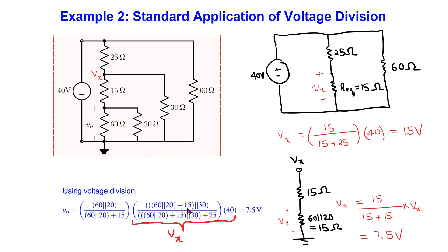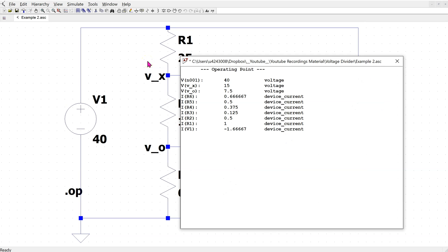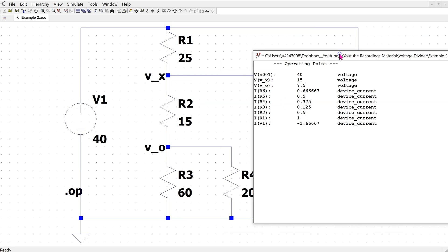With a little bit of experience and practice, instead of going through these intermediate steps, we can actually write an expression for the output voltage directly as shown. In this expression, the two parallel lines denote parallel combination of resistors, and we can identify the two voltage dividers that form part of the expression. Please pause the video now if you wish to study this in more detail. This is the same circuit constructed in LTSPICE. When we simulate, we can see that the output voltage V0 is 7.5 volts, which matches the calculated value.